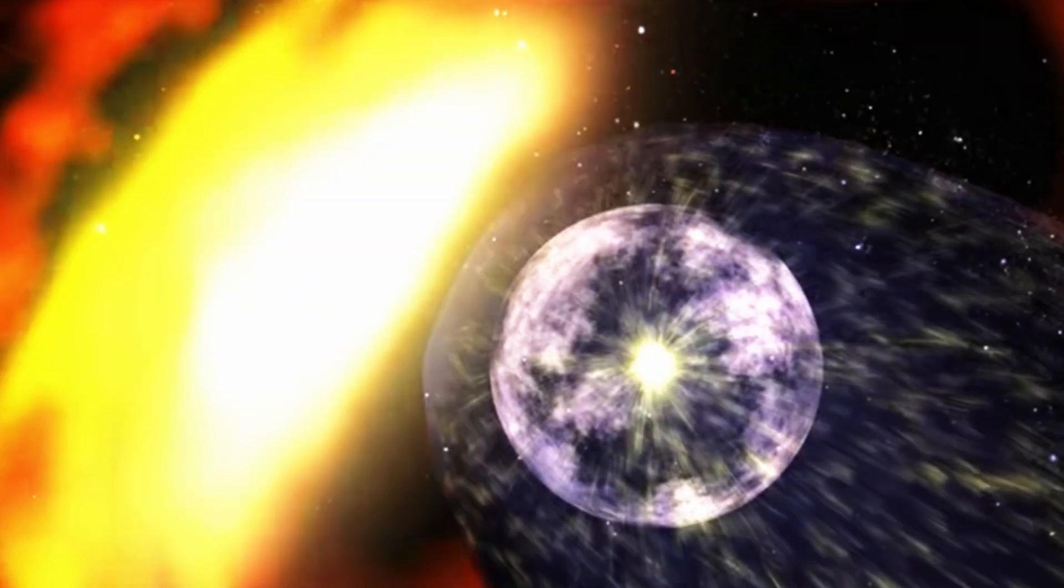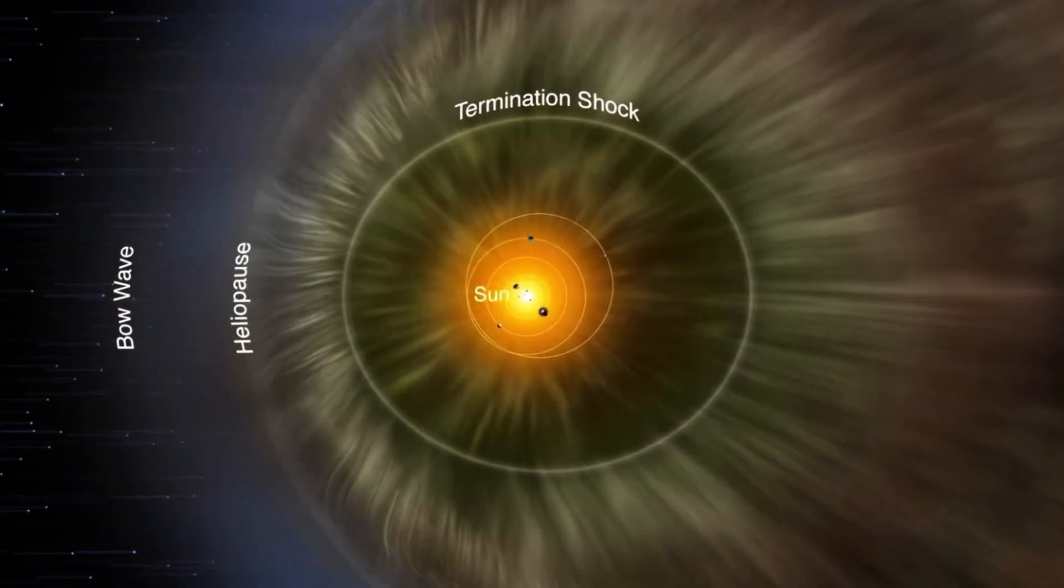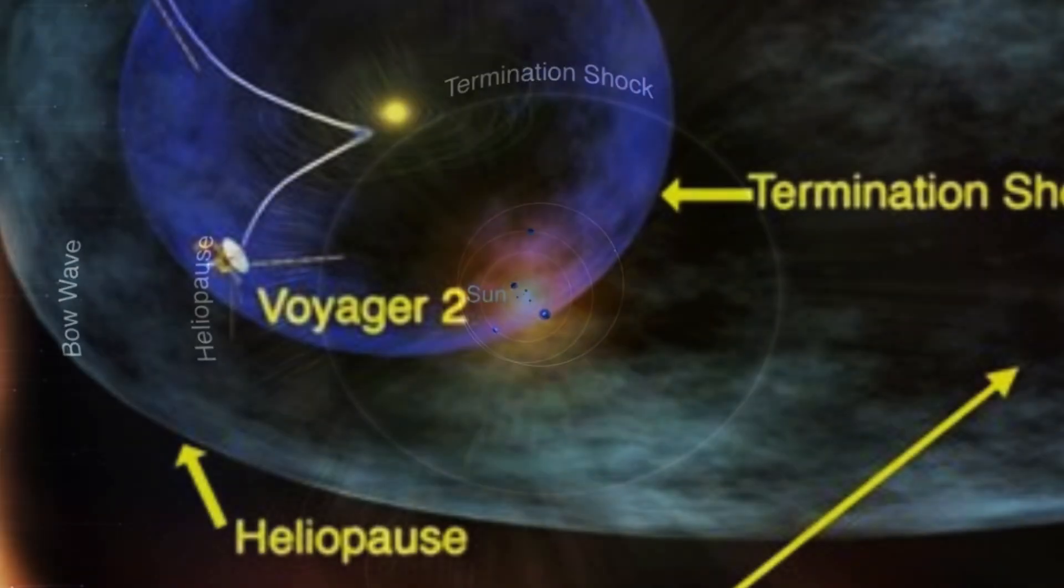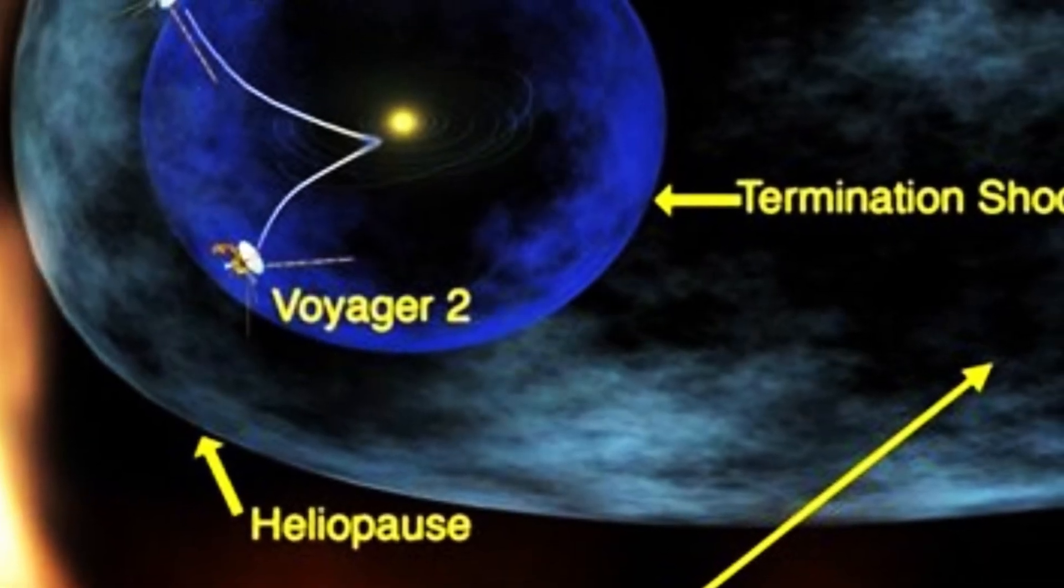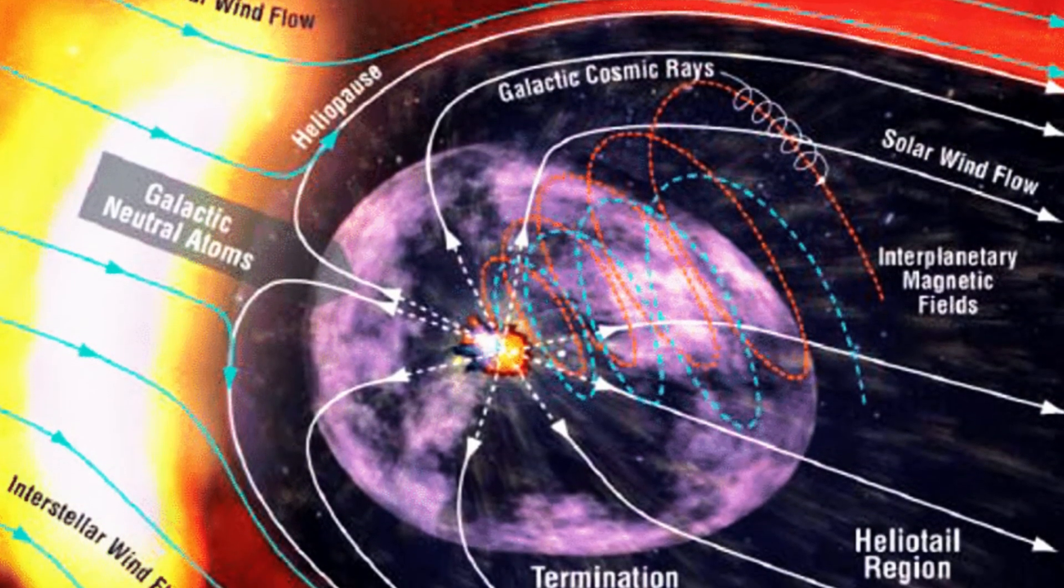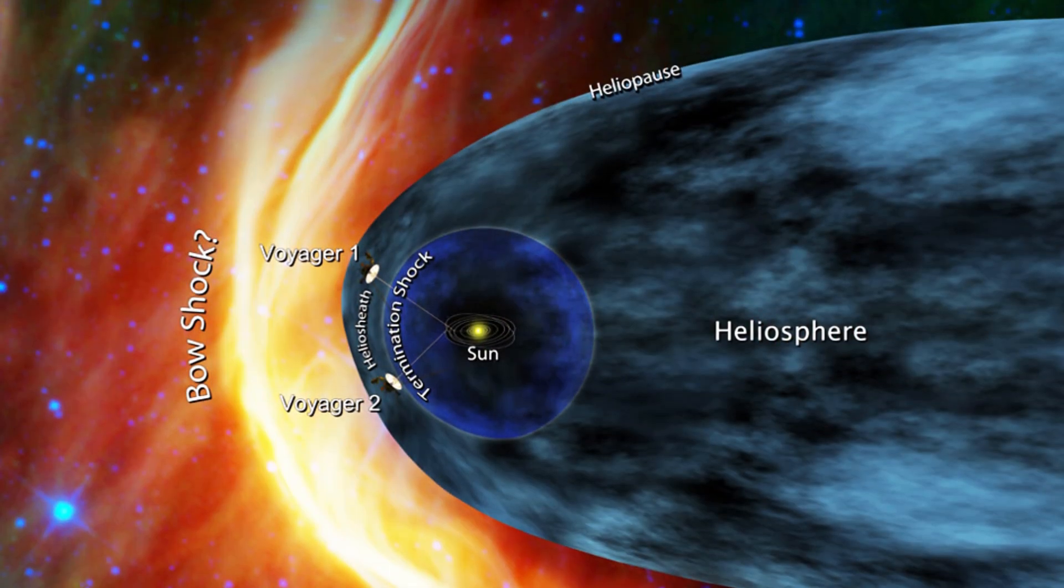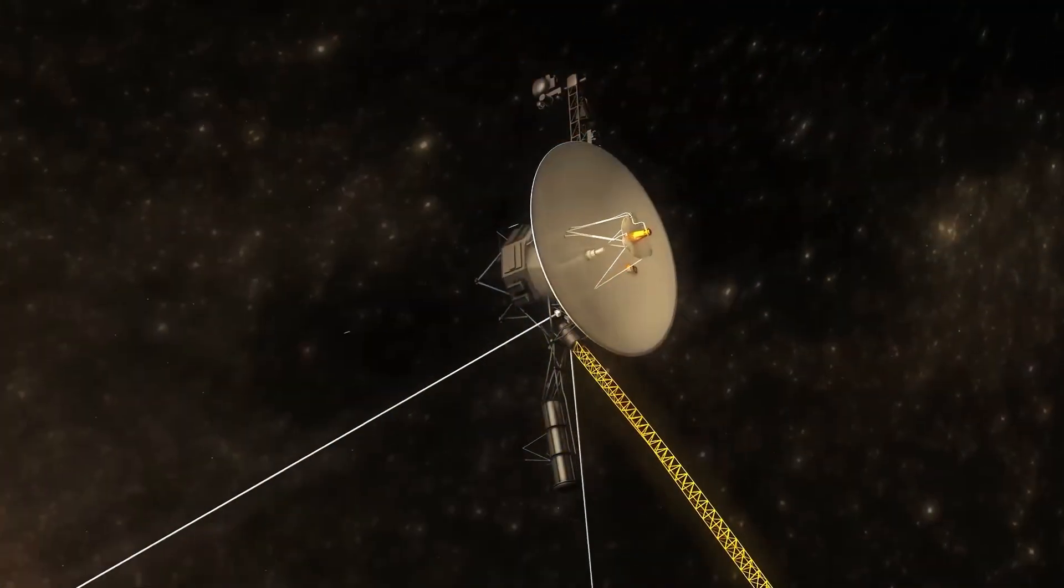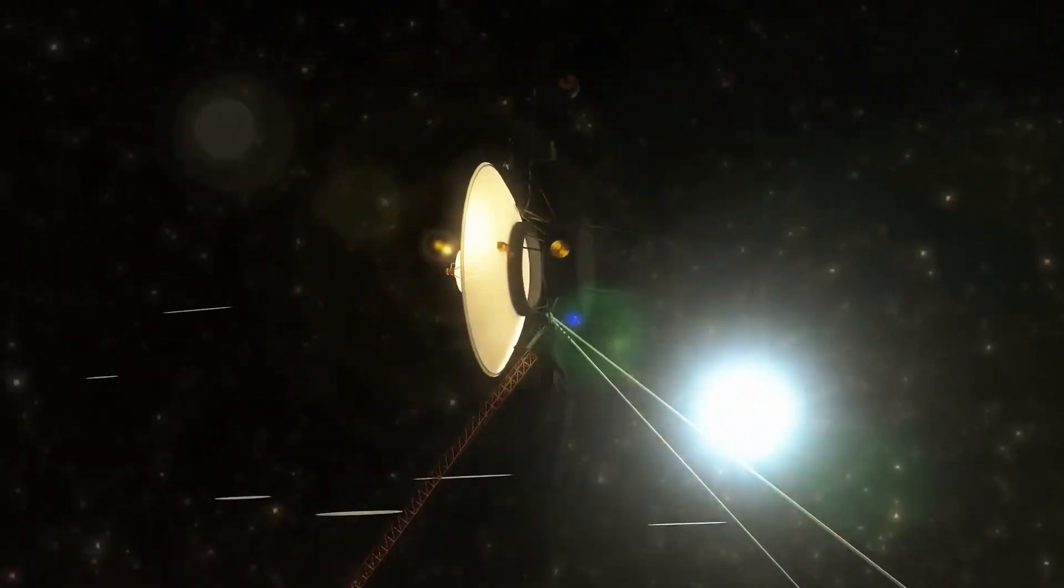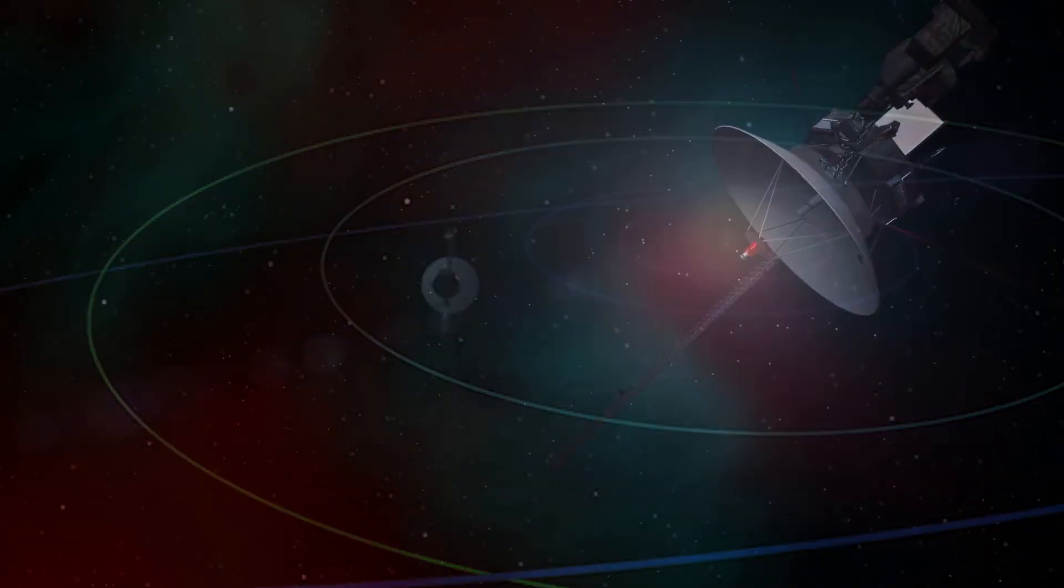The heliosphere, the vast bubble surrounding our solar system, extends approximately 11 billion miles from the Sun. This protective shield is created by the solar wind, a continuous stream of charged particles emitted by the Sun, and terminates at the heliopause, the boundary where the influence of the solar wind ceases and interstellar space begins. The only spacecraft to have crossed this frontier and exited the solar system are the Voyagers. Their findings sparked widespread scientific curiosity and debate.